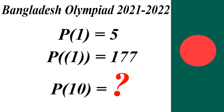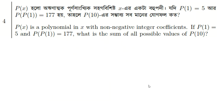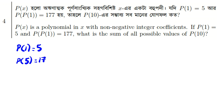Bangladesh Mathematical Olympiad 2021-2022 Problem number four. Here p of x is a polynomial in x with non-negative integer coefficients. If p of 1 equals 5 and p of p of 1 is 177, what is the sum of all possible values of p of 10? So we note that p of 1 is 5, and therefore p of p of 1 is p of 5, which equals 177.